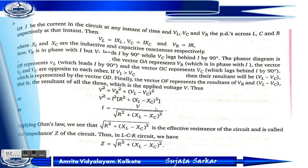The vector VL leads the current I by 90 degrees, and VC lags behind I by 90 degrees. Here VL is greater than VC. So the resultant applied voltage V squared equals VR squared plus (VL minus VC) squared, because VL is greater as it leads I by 90 degrees.